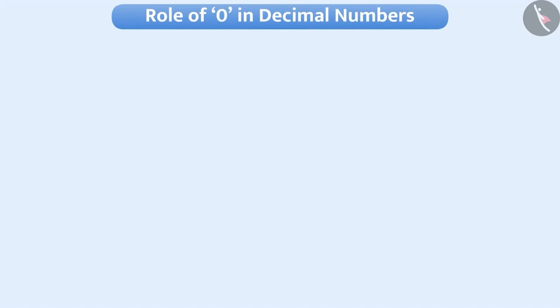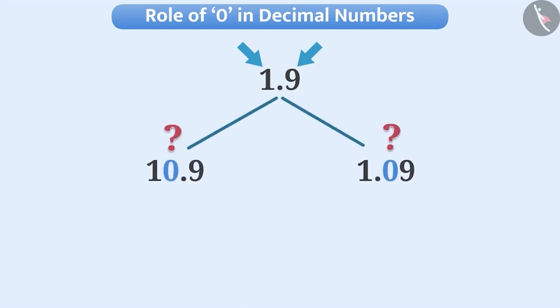Can we use zero at any place in the middle of the first non-zero digit and the last non-zero digit in any number? Think for a while.